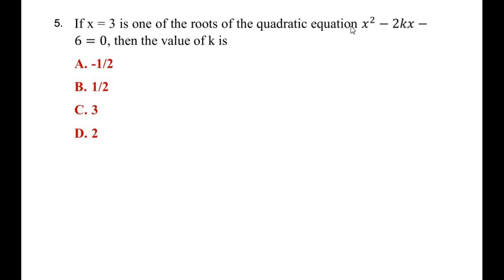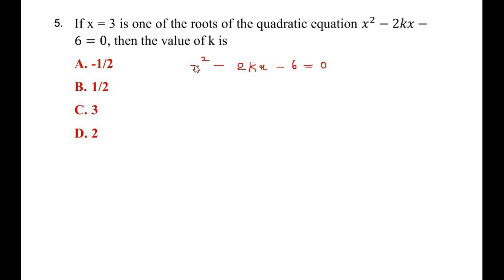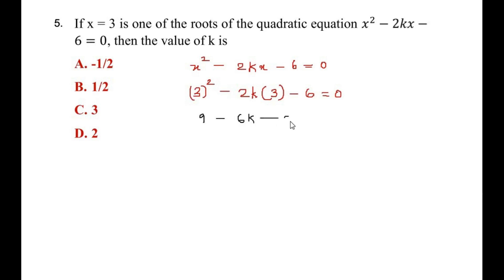The fifth question: if x equals 3 is one of the roots of x squared minus 2kx minus 6 equals 0, find the value of k. This is similar to the fourth question — pure substitution. Substituting x equals 3: 3 squared minus 2 times k times 3 minus 6 equals 0, giving 9 minus 6k minus 6 equals 0.